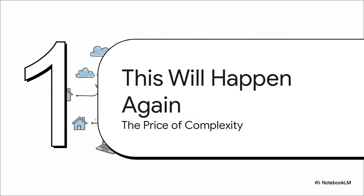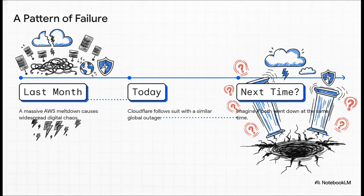Now, it's really tempting to look at this whole thing as a freak accident, a one-off event. But the uncomfortable truth is, this wasn't an anomaly. It was a preview. This didn't just happen in a vacuum. A few weeks earlier, an AWS meltdown caused its own version of chaos. First AWS, now Cloudflare. You start to see a pattern here. These failures aren't bugs. They're features of the system we built.